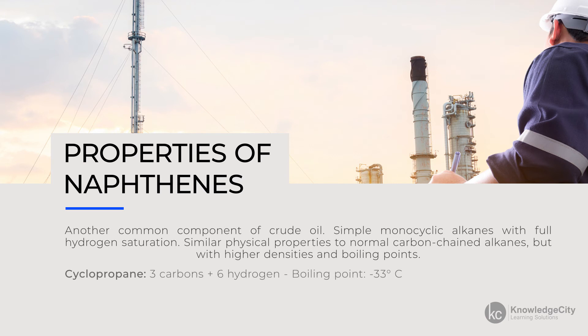The smallest naphthene is cyclopropane with 3 carbons, 6 hydrogens, and a low boiling point of negative 33 degrees Celsius, so it's found in gaseous form at ambient temperatures. The largest is cyclodecane with 10 carbons, 20 hydrogens, and a very high boiling point of 201 degrees Celsius.